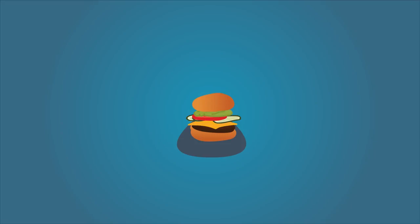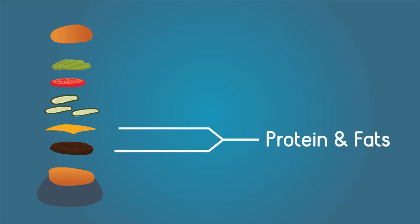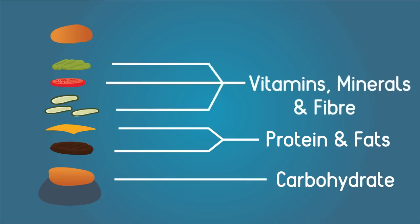Look at this juicy burger, doesn't it look appetizing? It has so many good things in it that my body needs: protein and fats in the meat and cheese, carbohydrates in the bun, vitamins, minerals, and fiber in the salad. But how can I use them? I need to get them into my blood, and this burger is never going to fit.